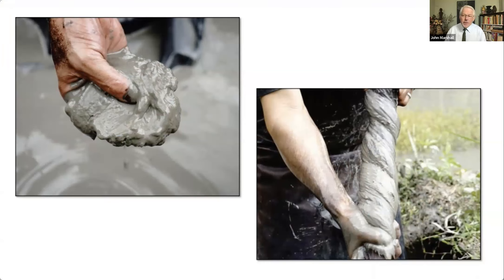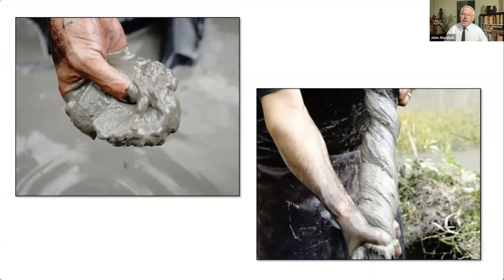This is actually a mud dyeing — a type of dorozome, a mud dyeing process. Once you've dyed the yarn, the color is attached, but like many plants it still needs a mordant. Rather than adding a synthetic mordant or some other process, they take the yarn and bury it in the mud. The mud contains many minerals, and those minerals become your mordant.